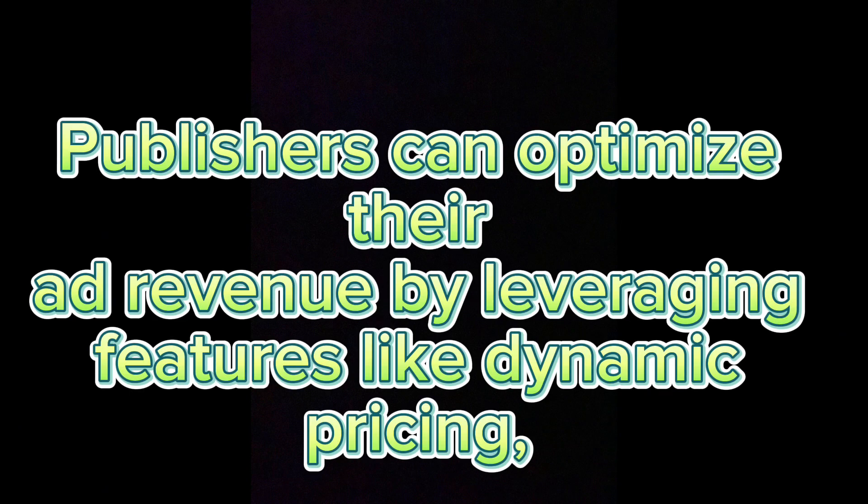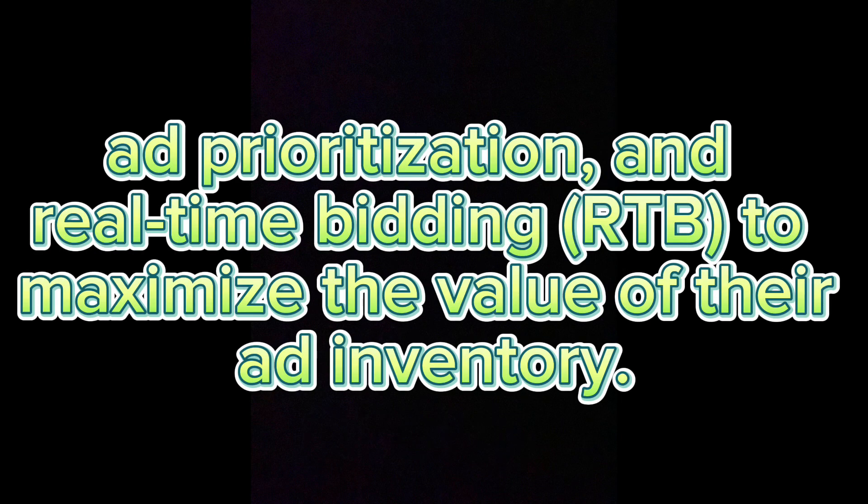Functionality 3 - Yield Optimization: Publishers can optimize their ad revenue by leveraging features like dynamic pricing, ad prioritization, and real-time bidding (RTB) to maximize the value of their ad inventory.